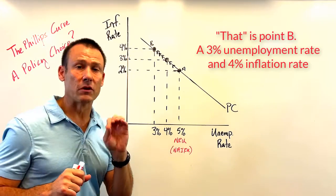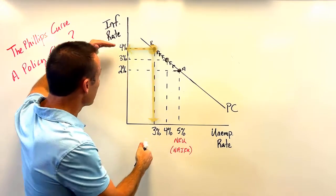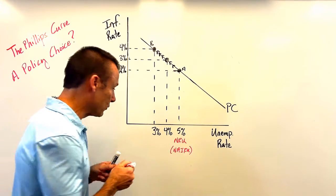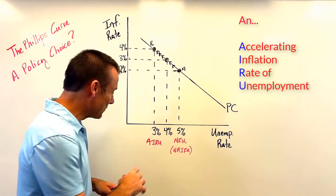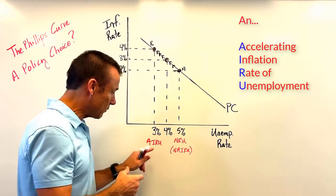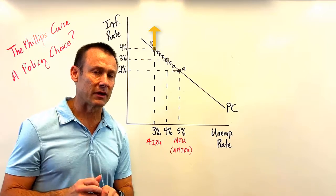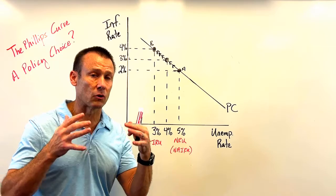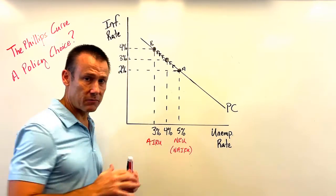But here's the big thing — that is not a policy choice. A policy choice would mean we could just stay at 3% unemployment and 4% inflation. But 3% is an AIRU — an Accelerating Inflation Rate of Unemployment. This is an unemployment rate at which the inflation rate will begin to accelerate upwards. Here's the reason: as we sit at point B, our inflationary expectations are going to adjust.